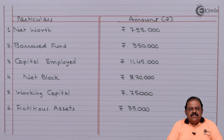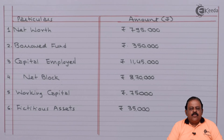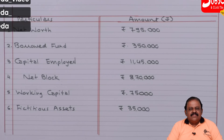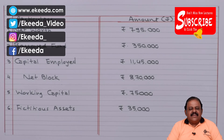In this question we have understood how to prepare a vertical balance sheet from a summary balance sheet, that is a horizontal balance sheet. We have also understood how to find out various values like net worth, working capital, net block, and how to present them in our answer. Thanks for watching this video. Stay tuned with eGIDA and subscribe to our channel. Thank you.